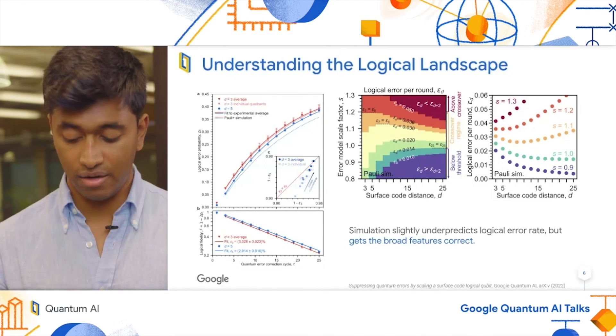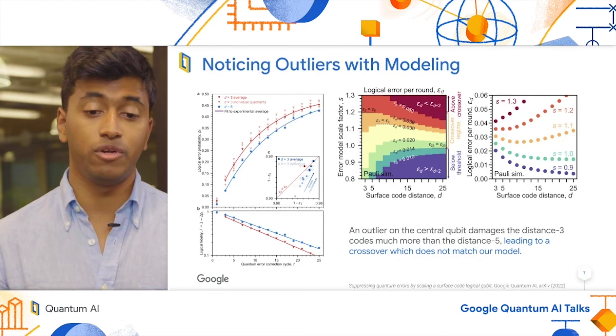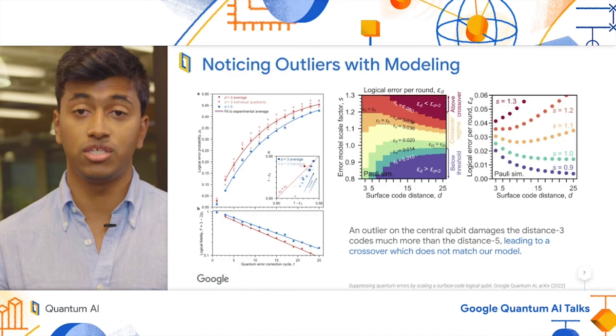But lastly, I want to show a counterexample to that, where an outlier has occurred in our system. In this dataset, we are prototyping a new change in our system,